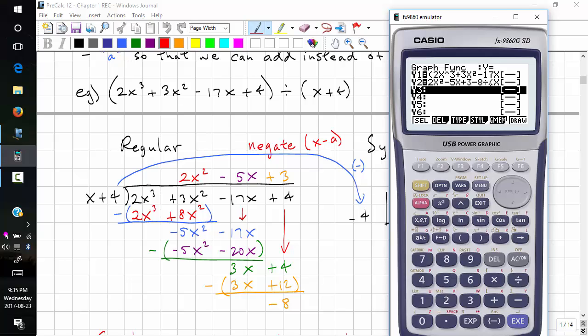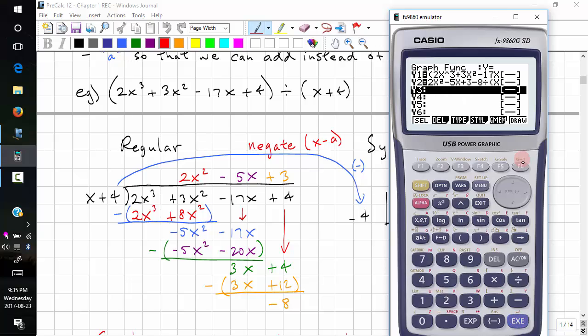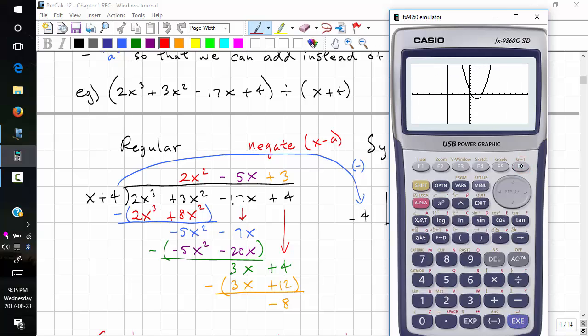And to set the window before we graph, we press shift window. And let's just use the standard window and F6 to draw. Okay, so there's our drawing.